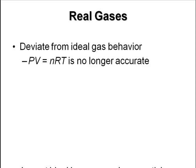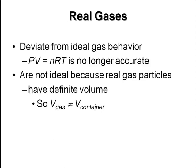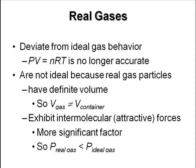What is meant by that? The reason is they are not ideal because real gas particles have definite volume. They have a definite volume, so the volume of the gas is not equal to the volume of the container. They also exhibit intermolecular attractive forces - this is one of the important things. This is a more significant factor on why they may not behave ideally. So the pressure of a real gas is less than the pressure of an ideal gas.